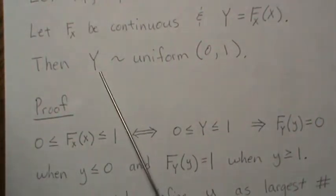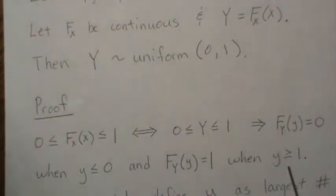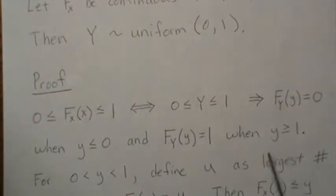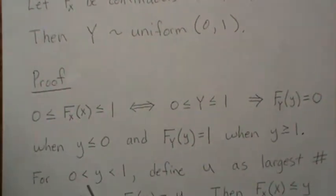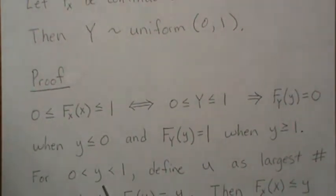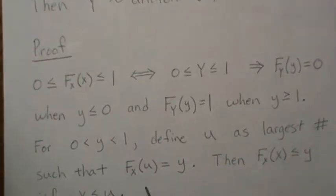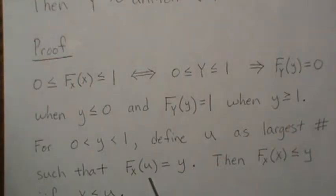Now we have to examine what happens between 0 and 1. So if Y is between 0 and 1, we're going to define U as the largest number such that F of U equals Y.